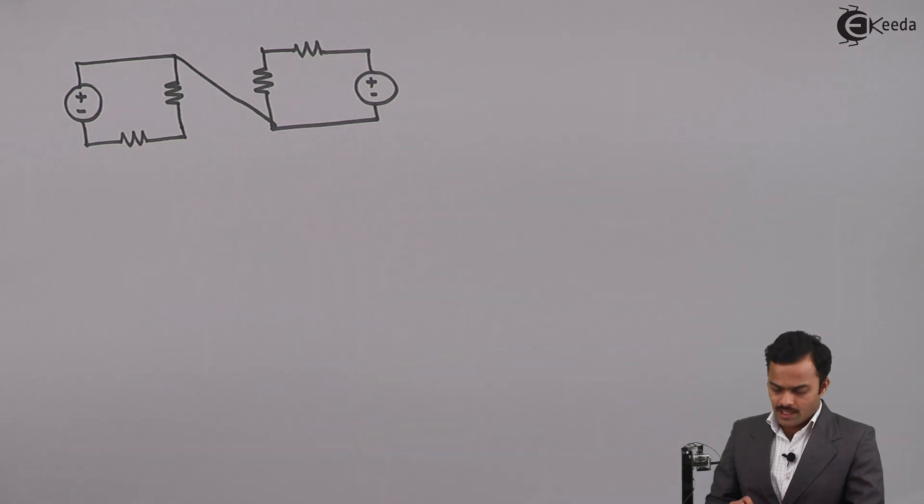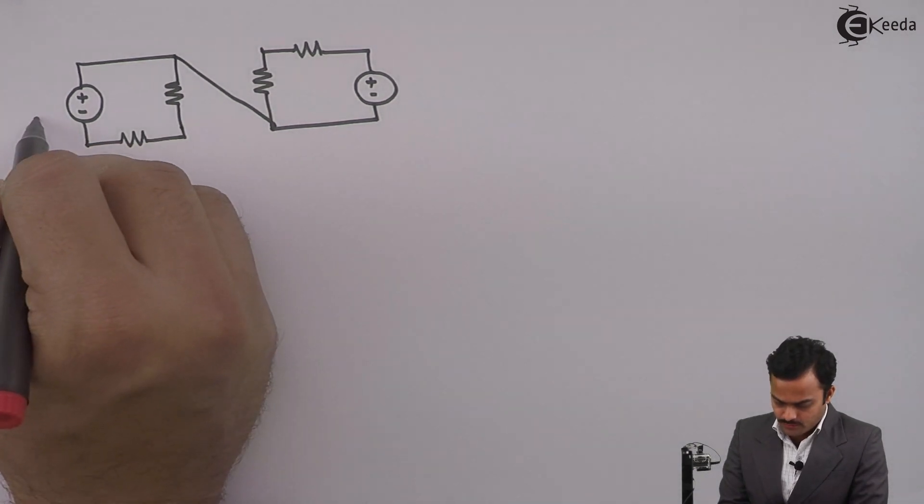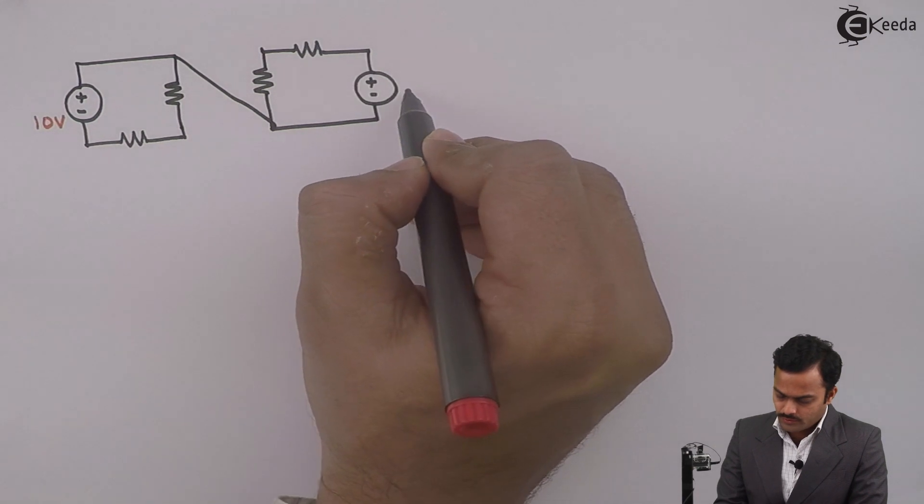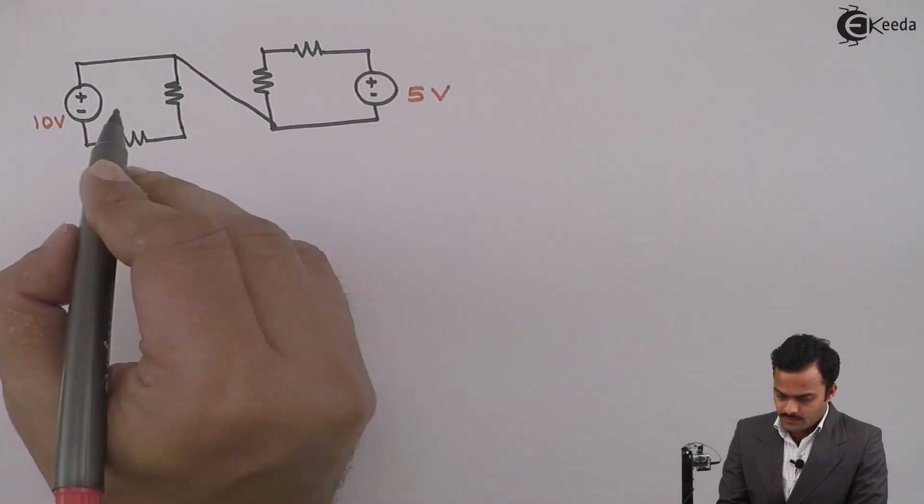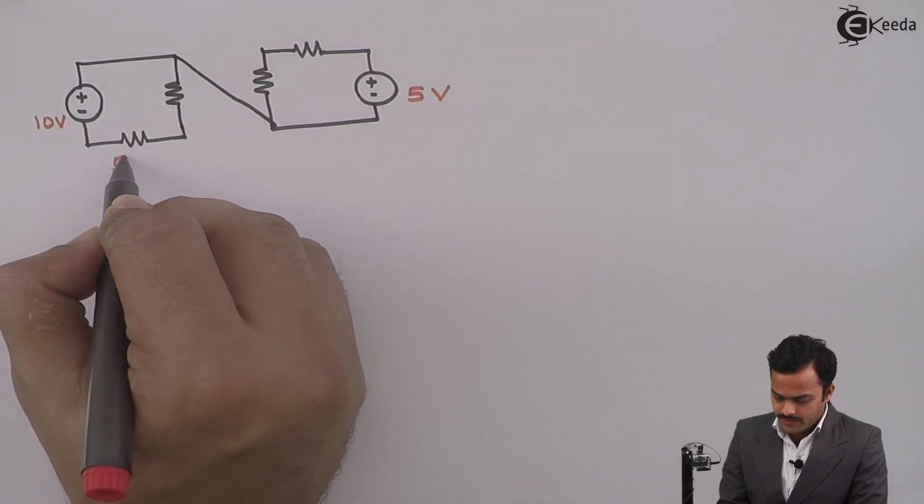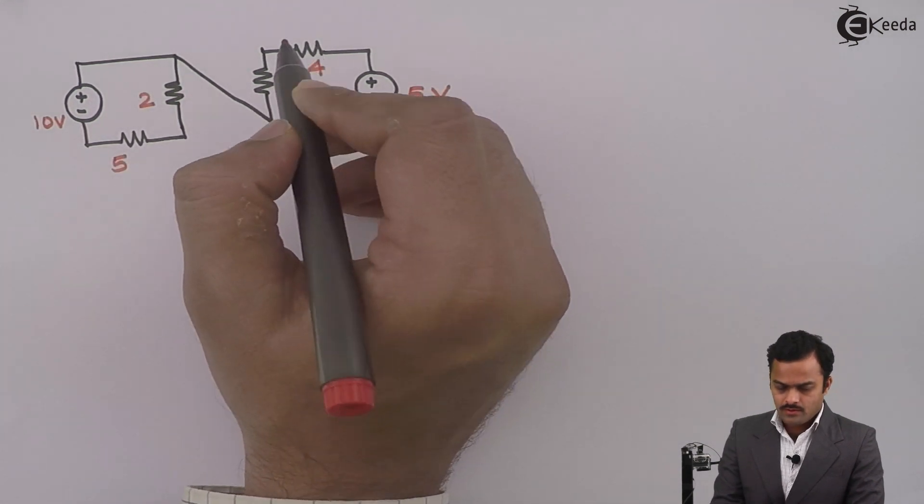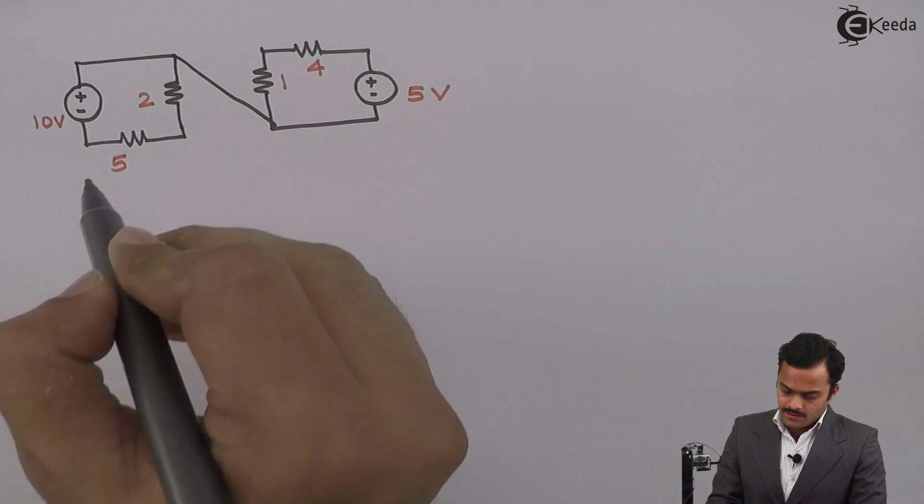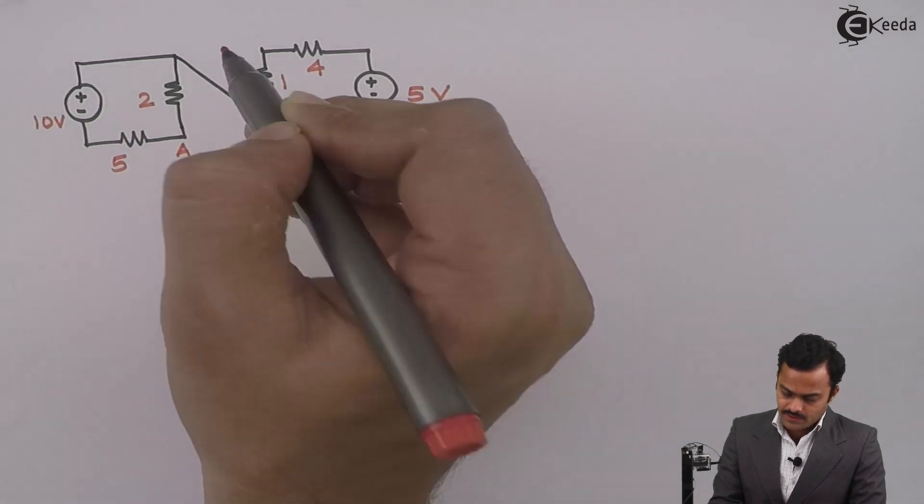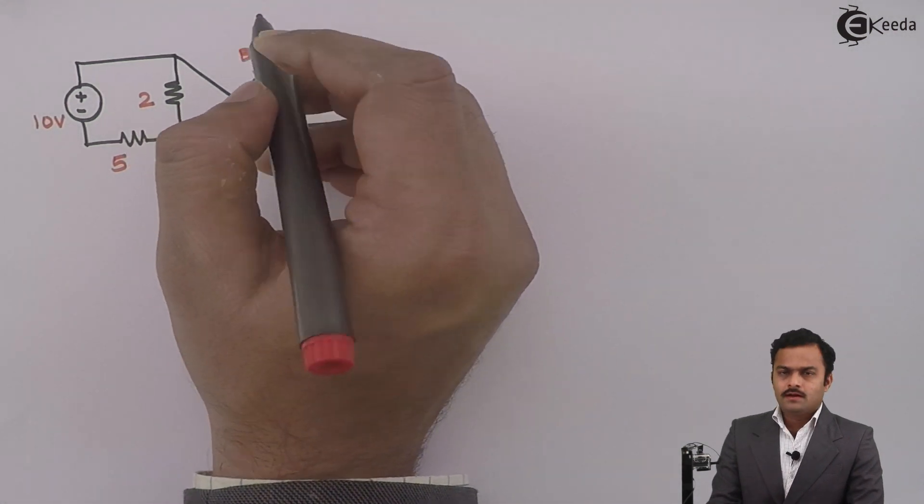In this circuit I have a voltage source of 10 volts, one more voltage source of 5 volts, and resistances of 5, 2, 1, and 4 ohms. These are the terminals given A and B across which we have to replace the entire circuit.